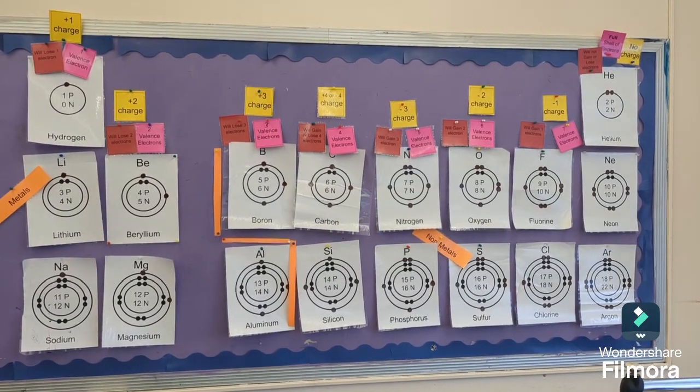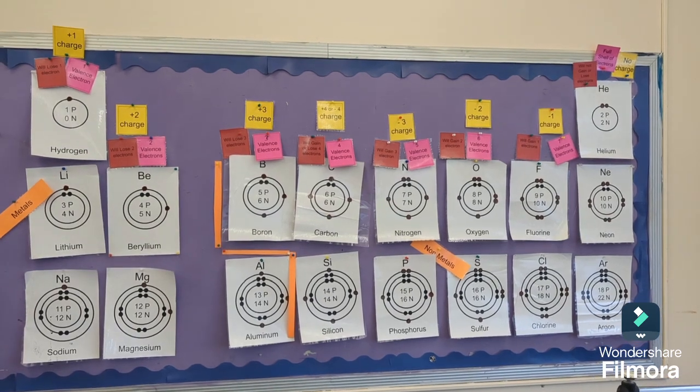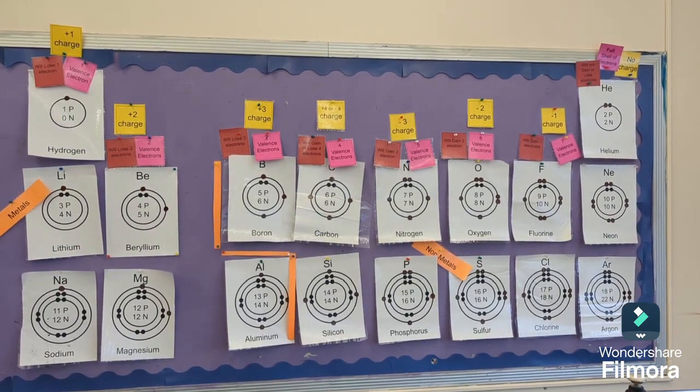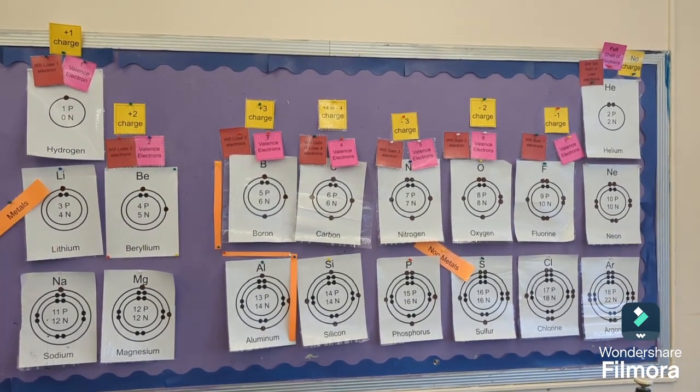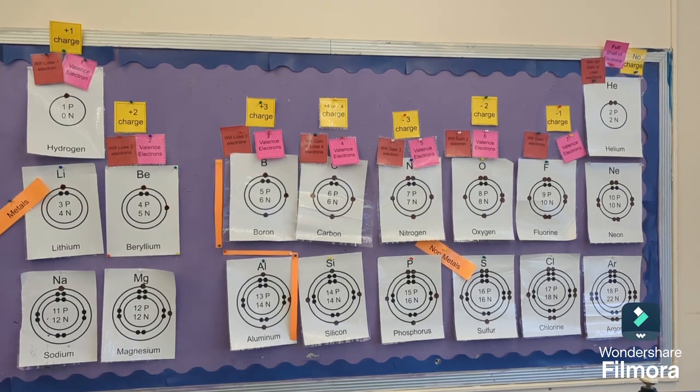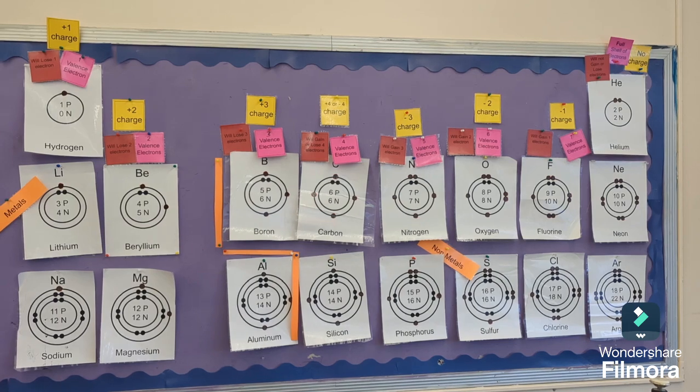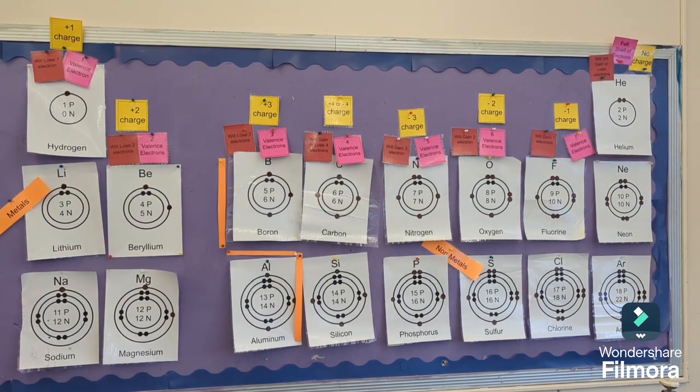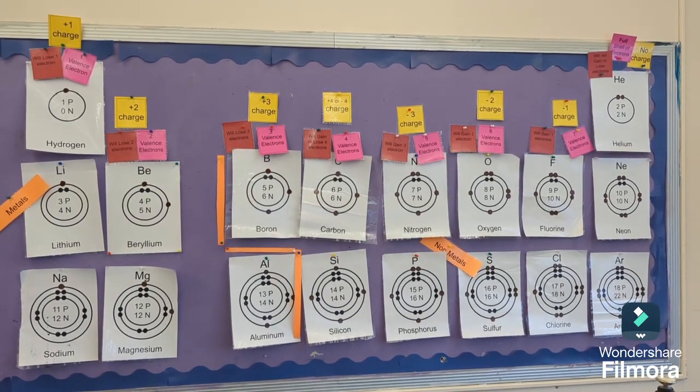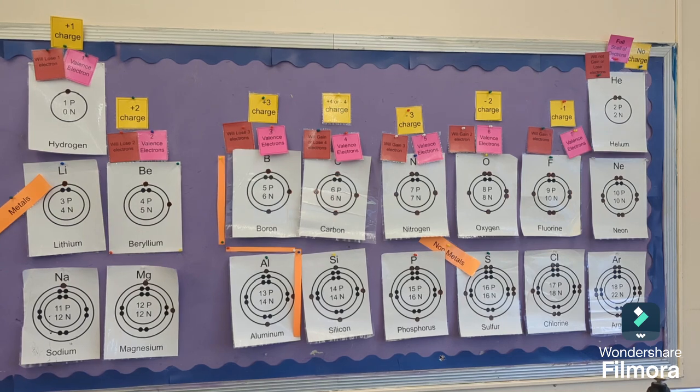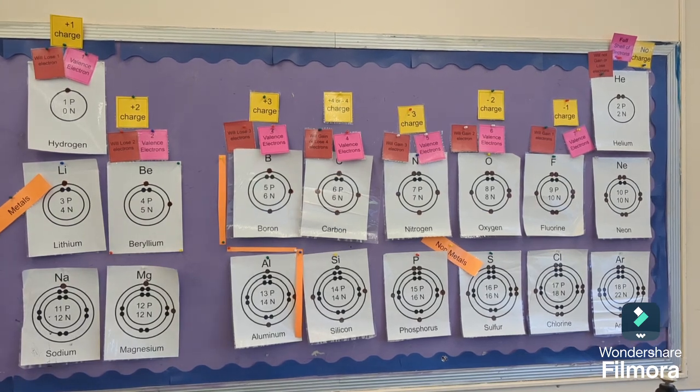Here's an image of a Bohr diagram periodic table. You can notice that in the first family on the left-hand side, there is one electron in the outer ring or one valence electron. And then it goes two for beryllium's family, skip the middle, three, four, five, six, seven, eight, or full. Really, you can't say eight, full.